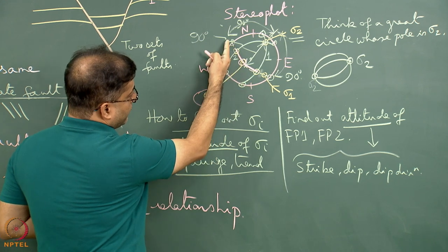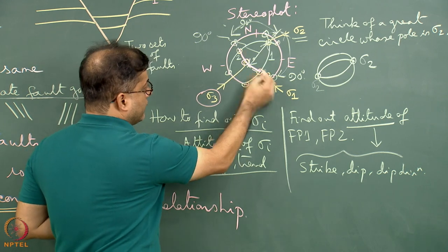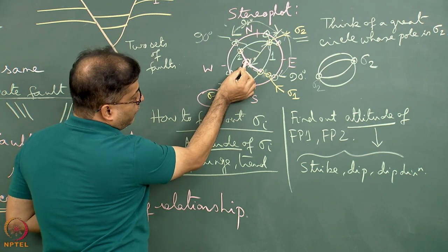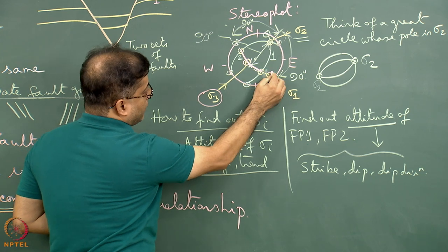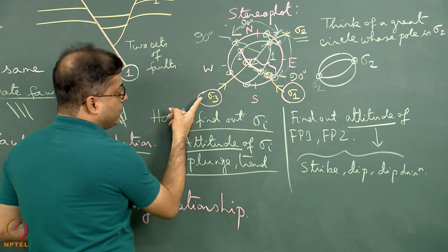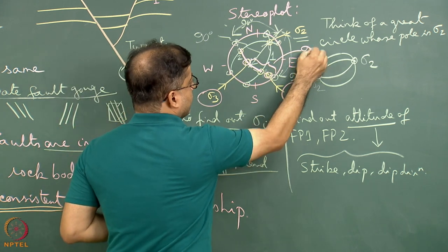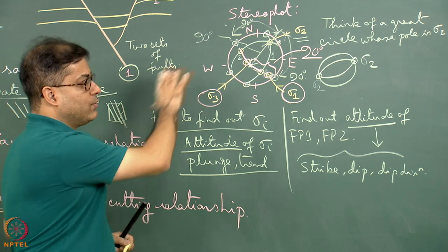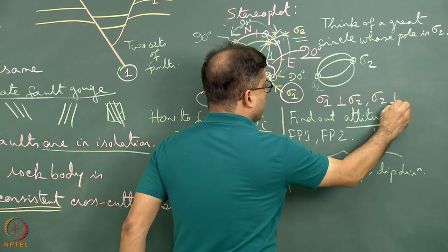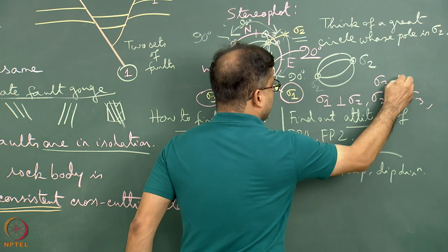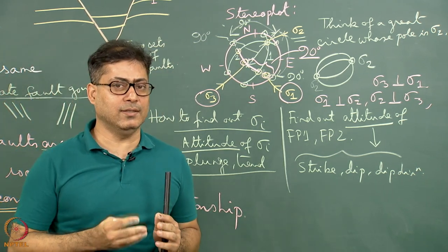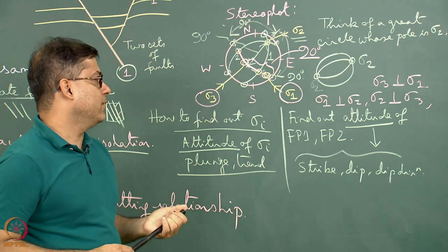From sigma 3, along the wide dashed great circle, move 90 degrees. One direction gives no plot inside the stereonet, but moving 90 degrees in the other direction yields a point inside the stereonet, which is marked as the sigma 1 stress axis. The angle between sigma 3 and sigma 1 is 90 degrees, and sigma 1 is perpendicular to sigma 2, sigma 2 to sigma 3, and sigma 3 to sigma 1 — the principal stress axes are always mutually perpendicular.